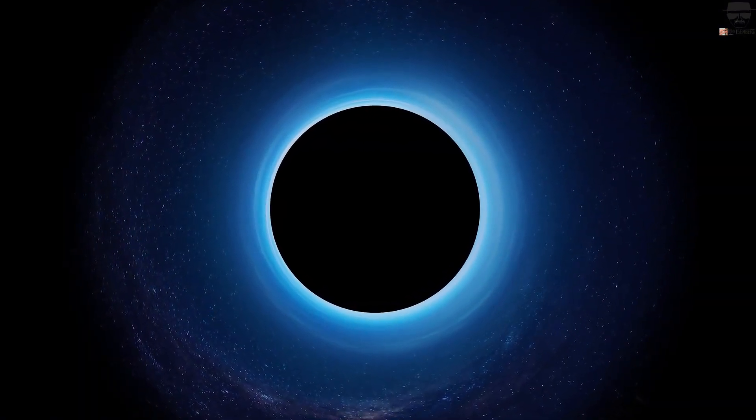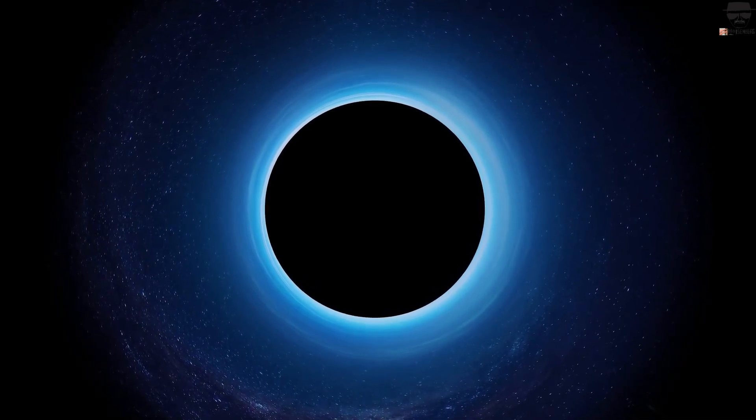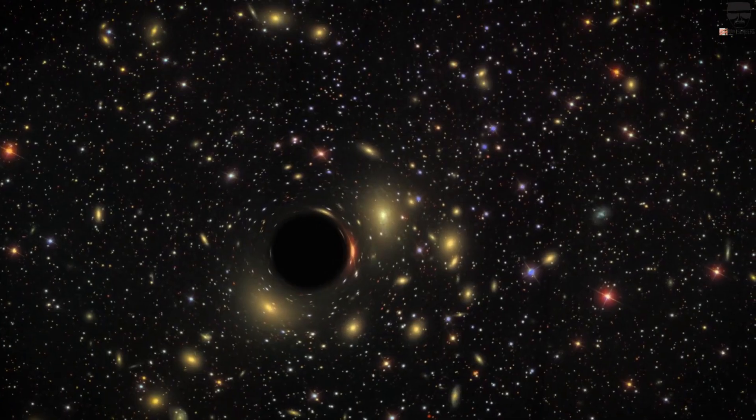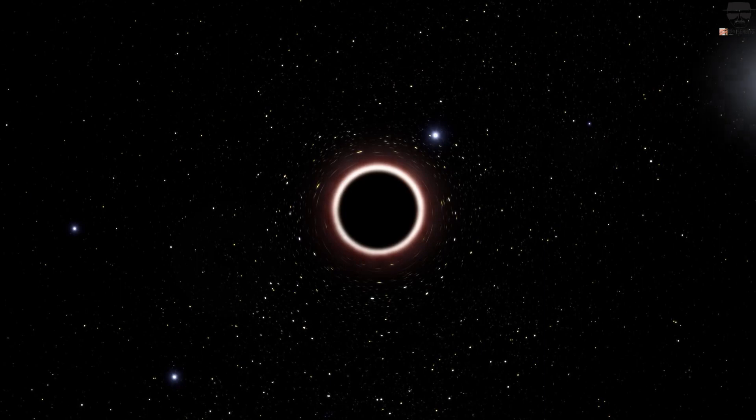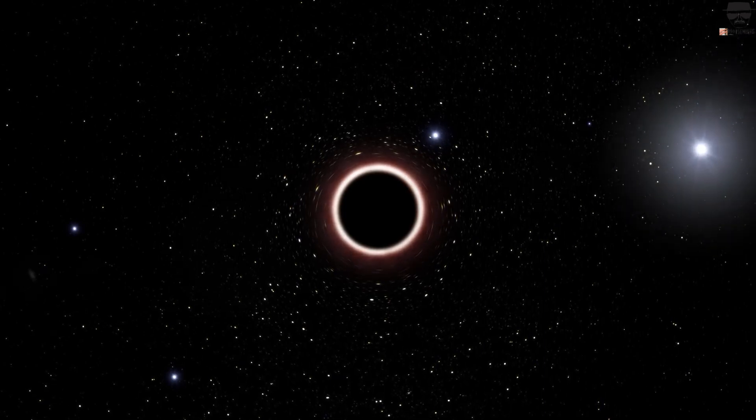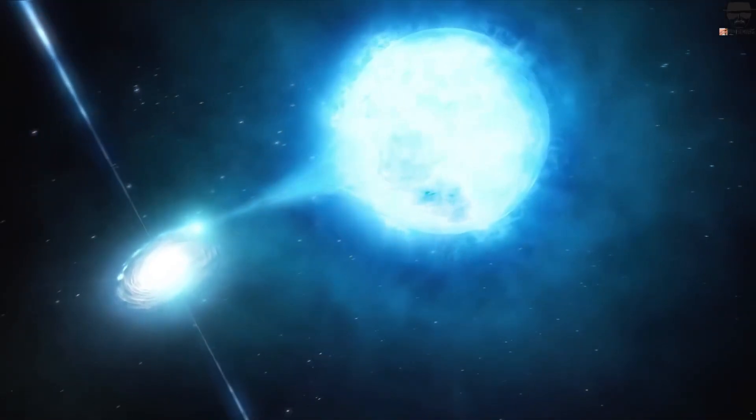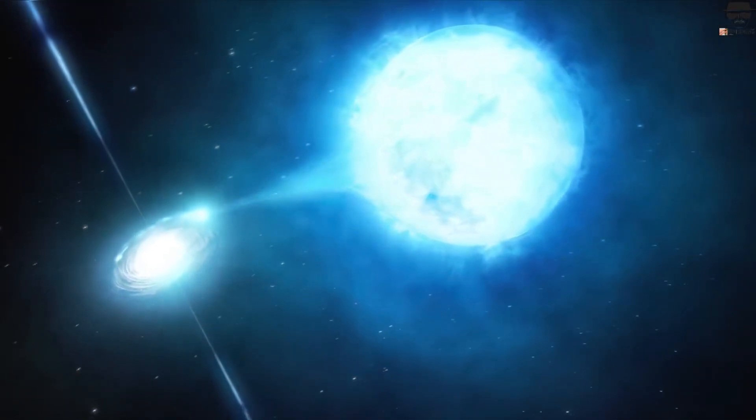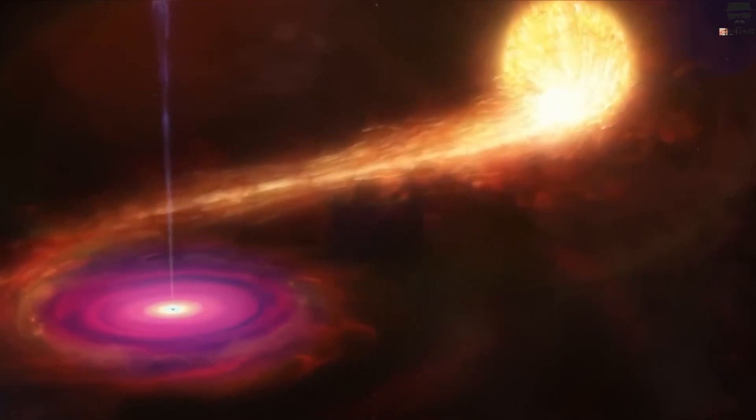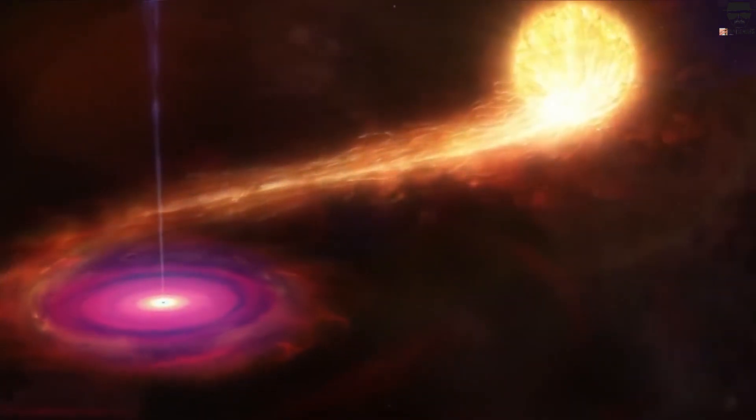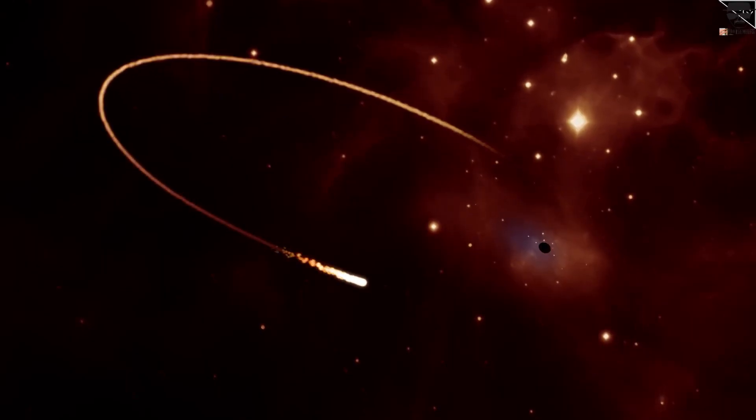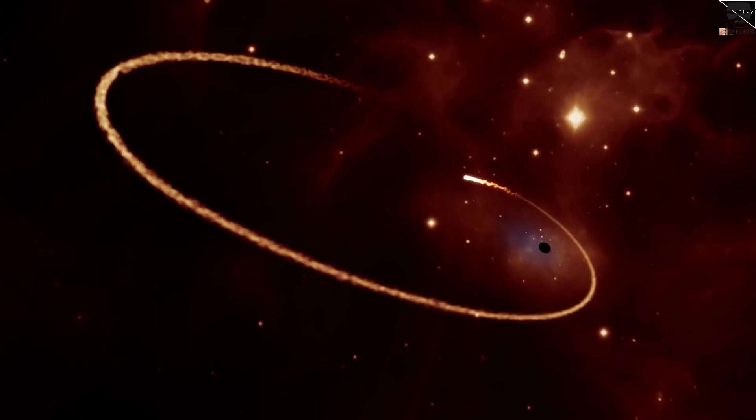A black hole cannot be seen because the strong gravity won't allow even light to escape it. However, scientists can see the effects of its strong gravity on the stars and gases around it. If a star is orbiting a certain point in space, scientists can study the star's motion to determine if it is orbiting a black hole. When a black hole and a star are orbiting close together, high-energy light is produced. Scientific instruments can see this high-energy light.